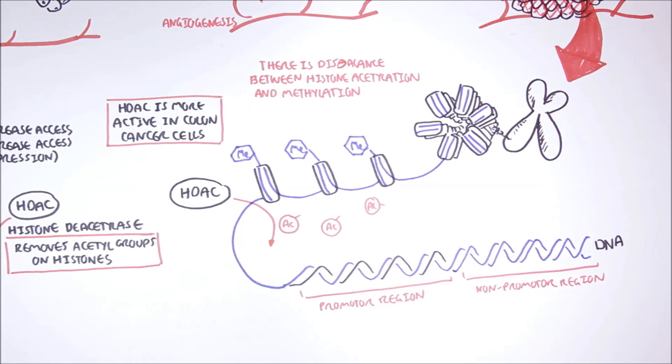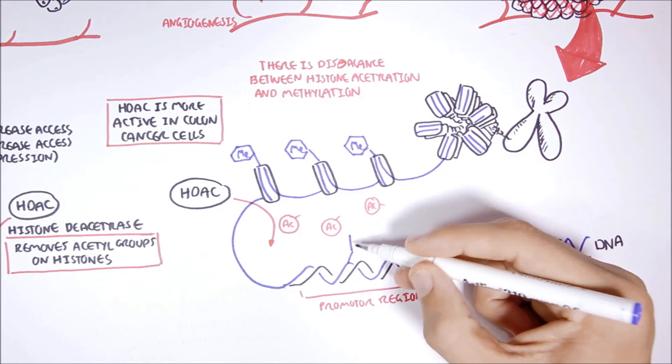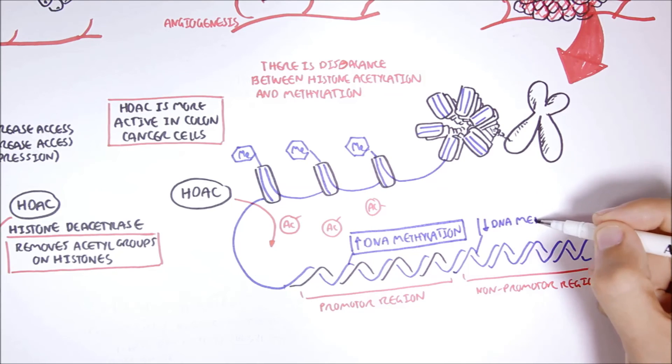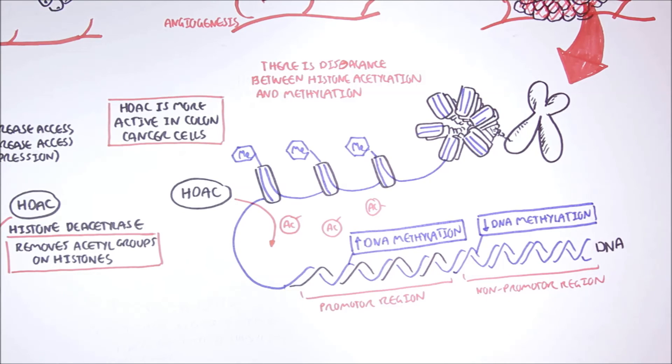In colon cancer cells, we also see changes in DNA methylation. In promoter regions, for example, there is usually hypermethylation, particularly in tumor suppressor genes and DNA repair genes. This results in some of the mutations we talked about earlier. And in non-promoter region, there tends to be fewer methylation.